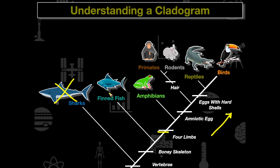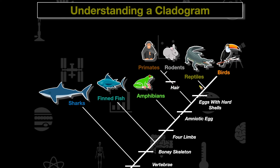Another question you might be asked is: what is the most recent common ancestor of the birds? You just find where they converge. The most recent common ancestor alive today would be reptiles — reptiles and birds are more closely related to each other than, say, rodents and birds.